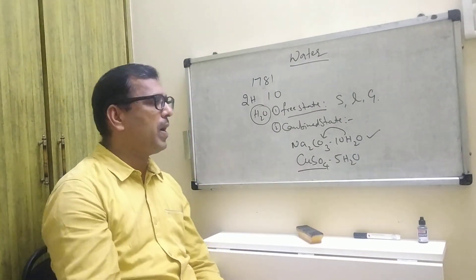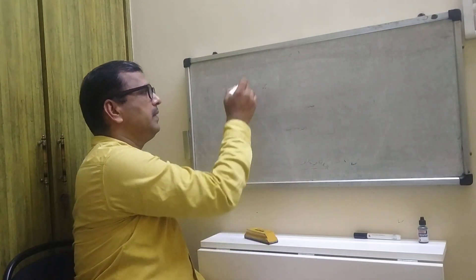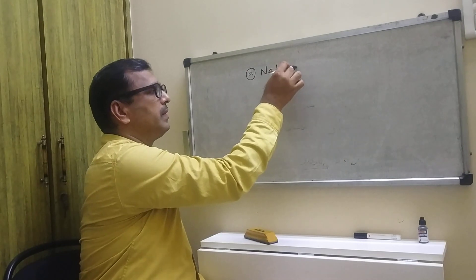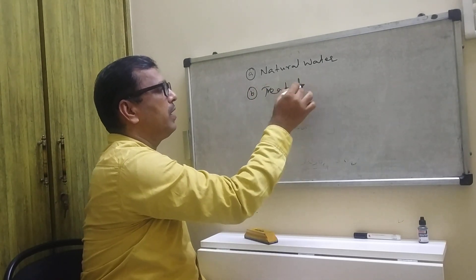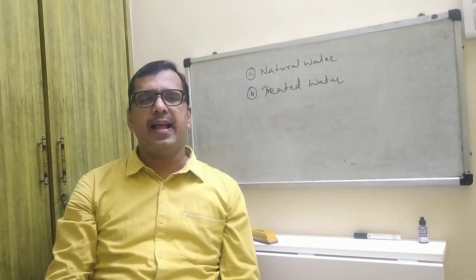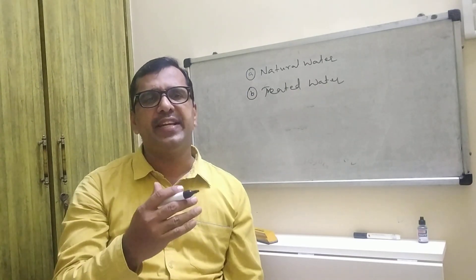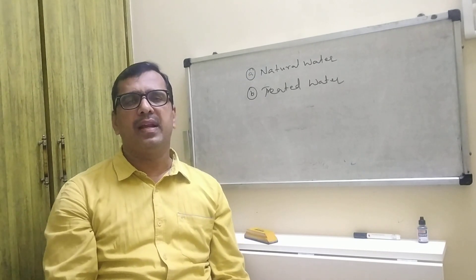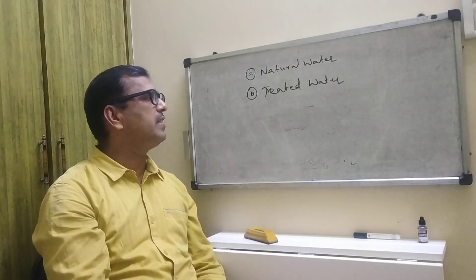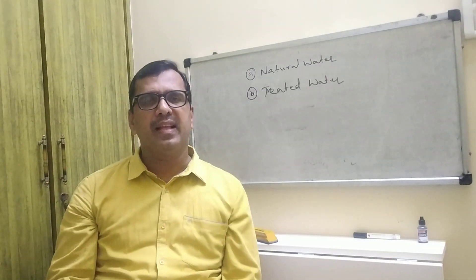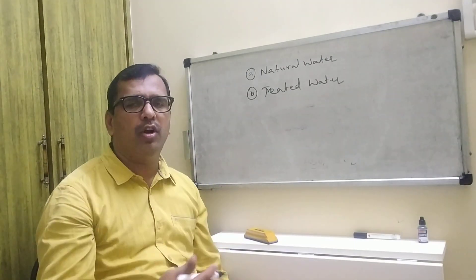Water is classified into two parts: natural water and treated water. Natural water is the water which occurs in the free state — in the form of well water, river water, sea water, and rain water. Because it occurs in a natural state, we call it natural water.